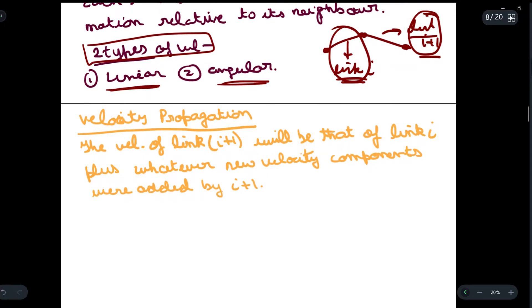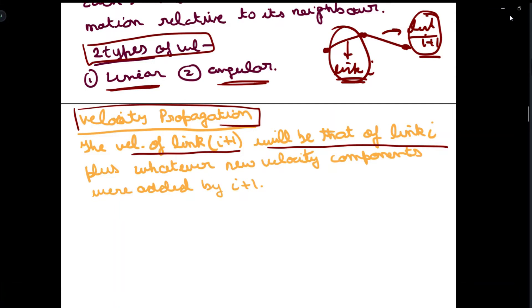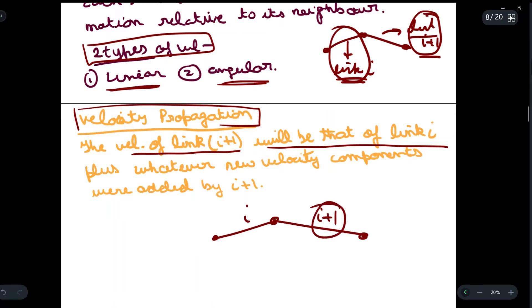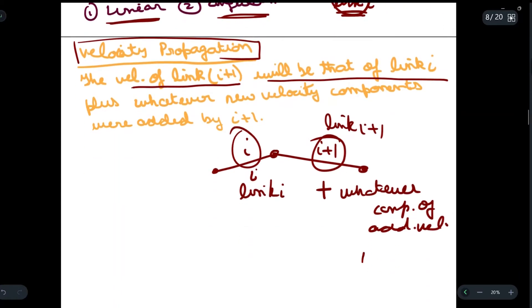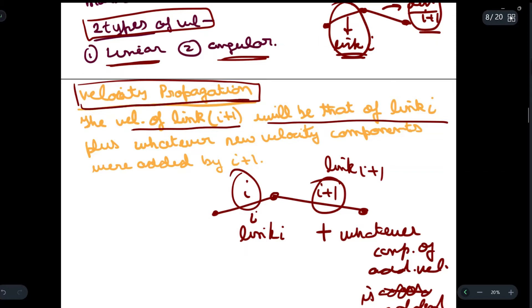Velocity propagation states that the velocity of link i+1 will be that of link i, plus whatever new velocity components were added by link i+1. That is, the velocity of link i+1 will be the same as the velocity of link i, plus whatever additional velocity component is added to link i+1. In short, we are going to find the angular and linear velocity of link i+1 with respect to link i.